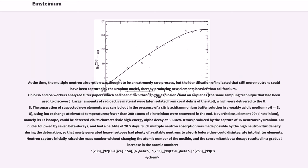Nevertheless, element 99, Einsteinium, namely its Es-253 isotope, could be detected via its characteristic high-energy alpha decay at 6.6 mega electron volts. It was produced by the capture of 15 neutrons by uranium-238 nuclei followed by 7 beta decays, and had a half-life of 20.5 days. Such multiple neutron absorption was made possible by the high neutron flux density during the detonation, so that newly generated heavy isotopes had plenty of available neutrons to absorb before they could disintegrate into lighter elements.